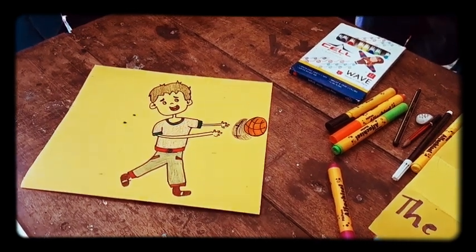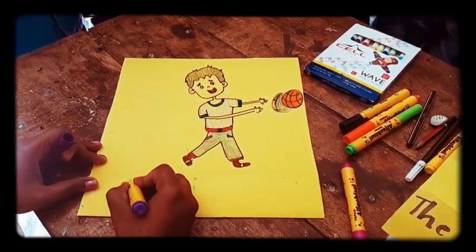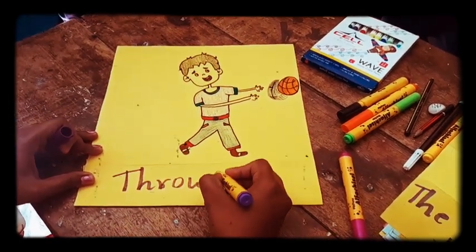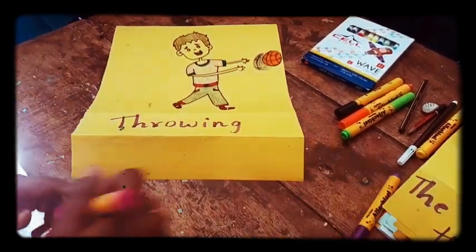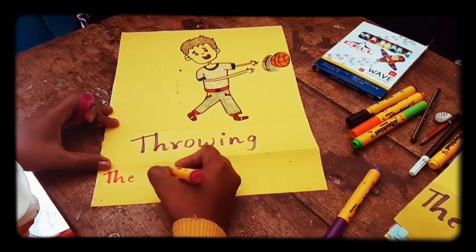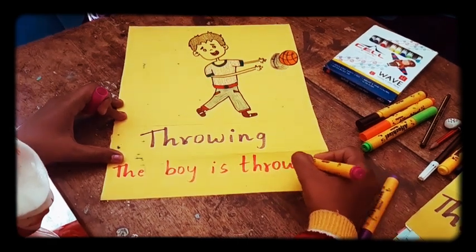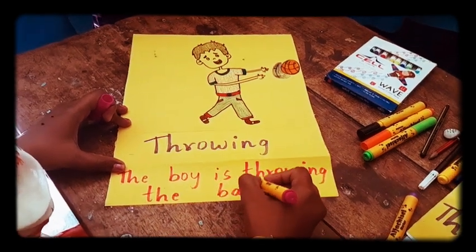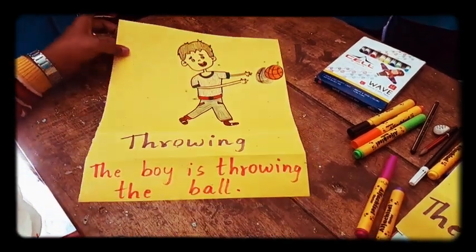What is he doing now? Throwing. Throwing the ball. So which is the verb? Throwing. T-H-R-O-W-I-N-G. The boy is throwing the ball. Now did you understand what is a verb and sentences with verbs? Yes.